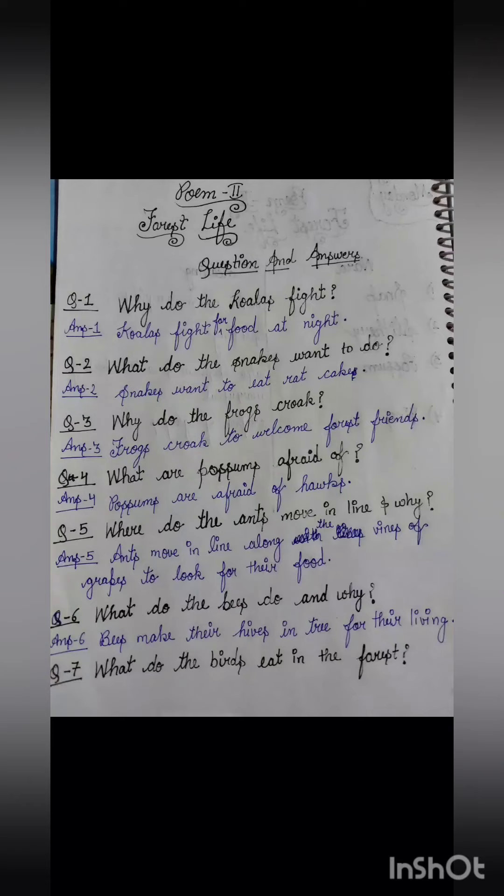Question 5: Where do the ants move in line and why? Answer: Ants move in line along the vines of grapes to look for their food.